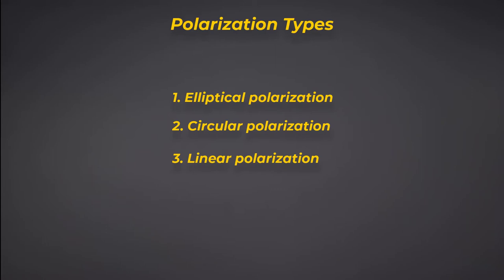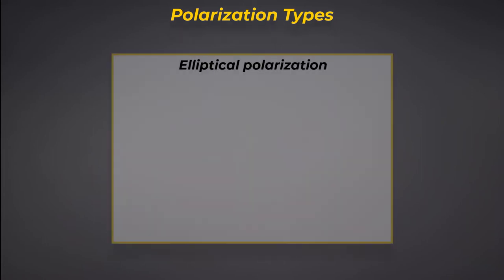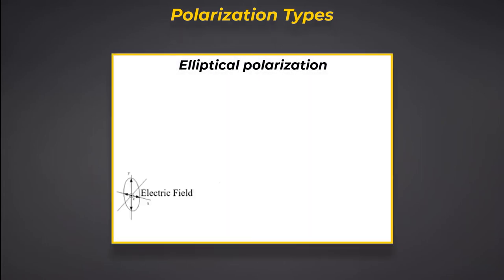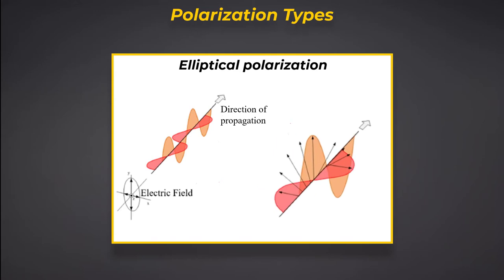An antenna radiates elliptically polarized waves when the field vector, whether it's electric or magnetic, for that transmitted wave from the antenna, has two unequal orthogonal linear components and the phase difference between them is an odd multiple of 90 degrees.